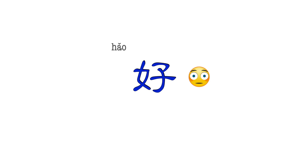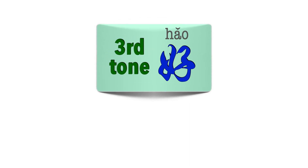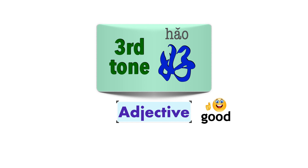First things first. Are you aware that there are two ways to read this character? It can be read in the third tone, 好 (hǎo), and also in the fourth tone, 好 (hào). Let's start from the third tone, 好. This is mostly an adjective, and the basic meaning is, as you know, good. It has several uses, and we'll be looking at five of the most common ones.